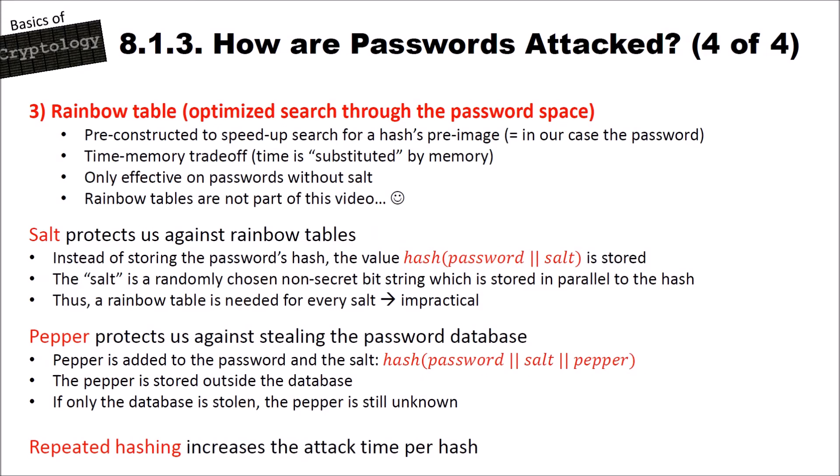The third attack uses rainbow tables, which allow an optimized search through the password space. Rainbow tables are pre-constructed to speed up finding a hash pre-image — in our case a password. Cryptographers call this a time-memory trade-off: computation time is substituted by memory. Rainbow tables are only effective on passwords stored without a salt. Details of rainbow tables are beyond this video, but a dedicated video may follow.